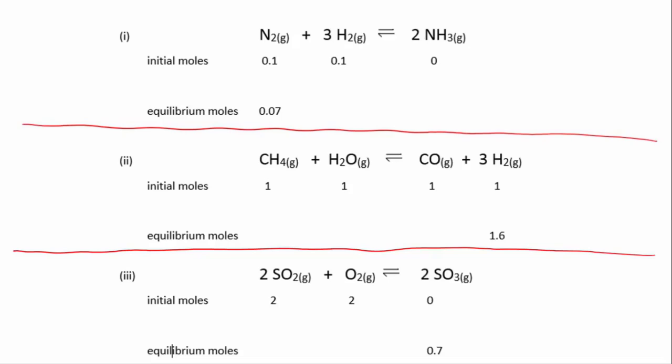We're given some information - we're told that initially 0.1 moles of nitrogen was mixed with 0.1 moles of hydrogen, and that there was no ammonia present at the beginning.